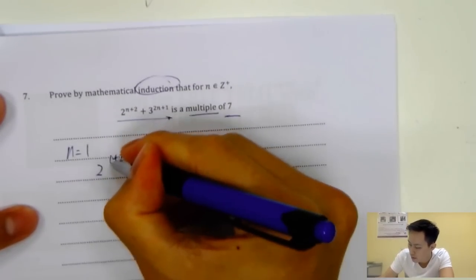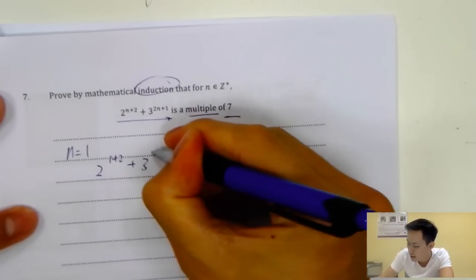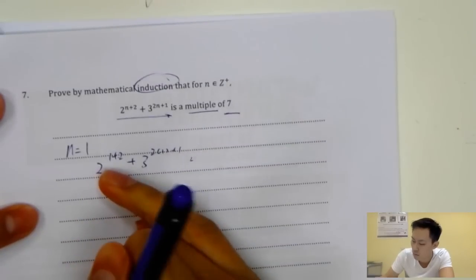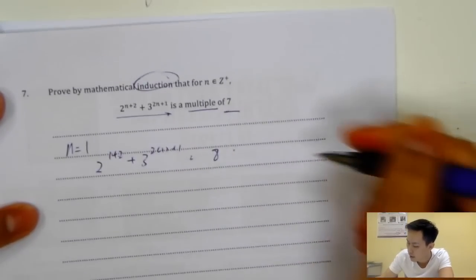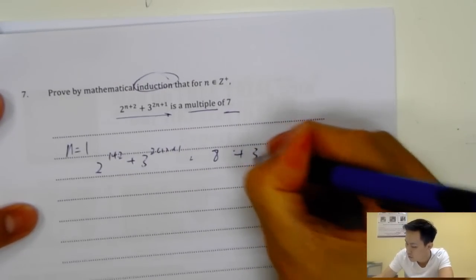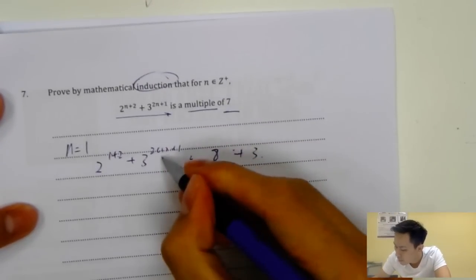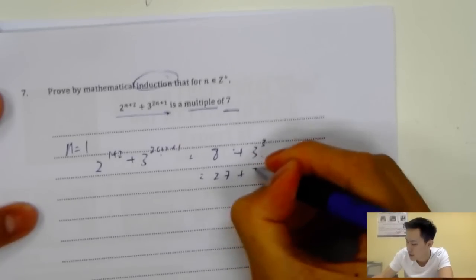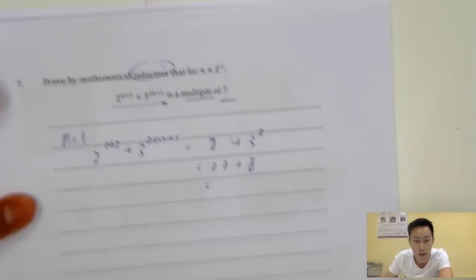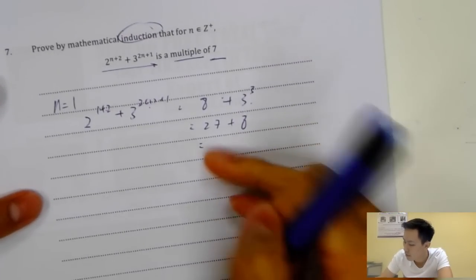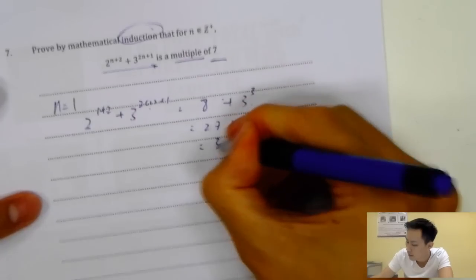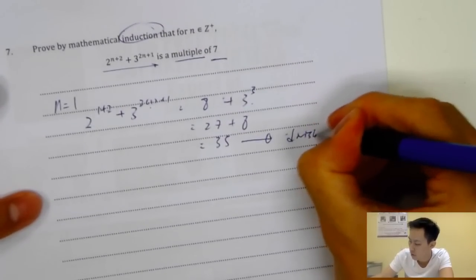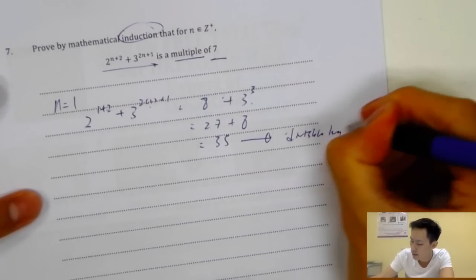So substituting N equals one: we get 2^(2×1+1) plus 3^(1+2), which is 2^3 plus 3^3, equal to eight plus 27, which is 35. And 35 is obviously divisible by seven.